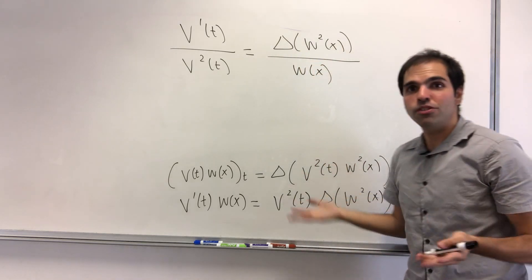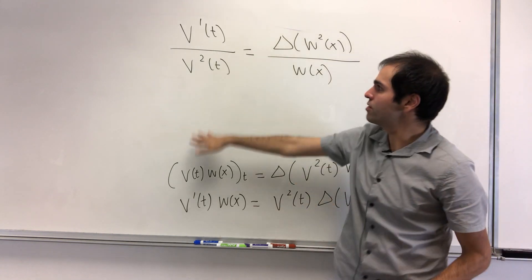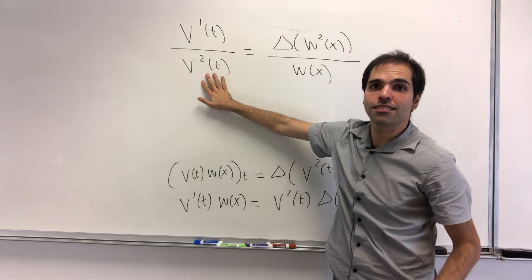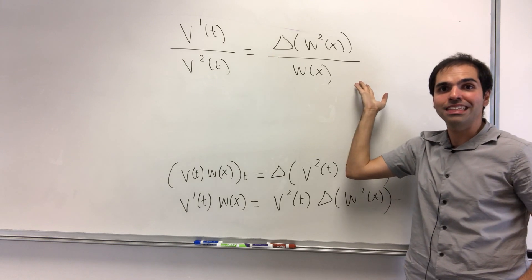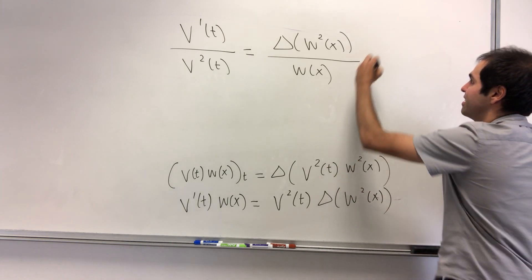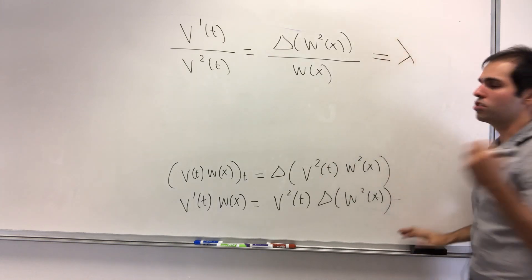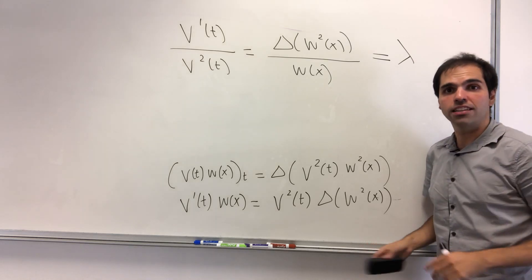And again, the same spiel with separation of variables. This doesn't depend on x, which equals something that doesn't depend on t, so it's actually constant, which equals some lambda, which we'll find explicitly soon.